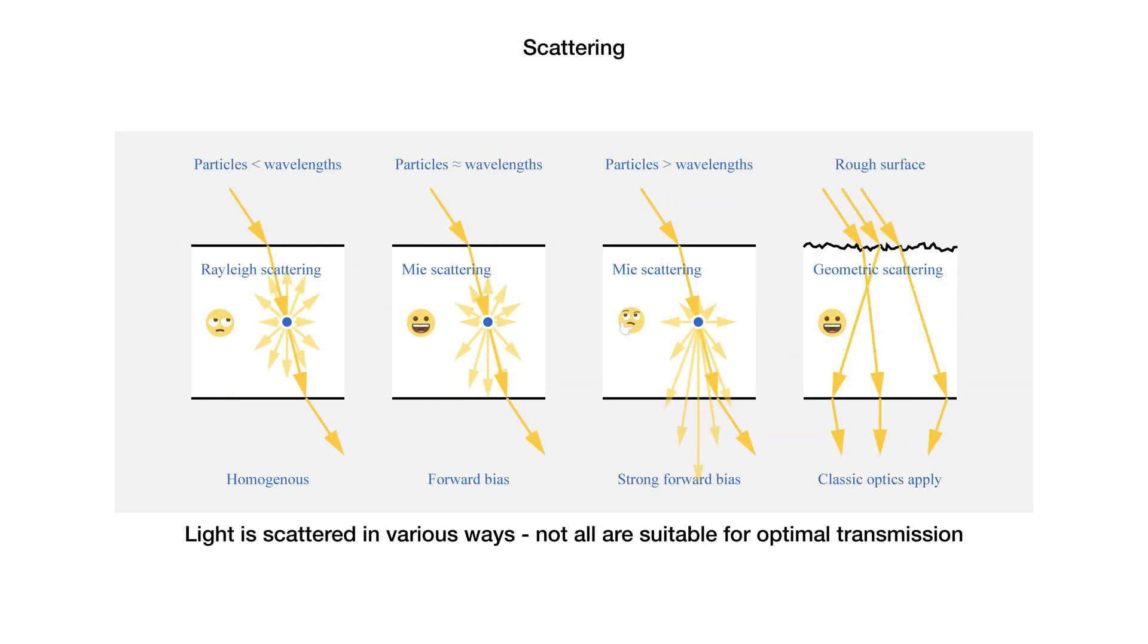There are four ways light can be scattered, depending on the light's wavelengths and the material's particle size. An ideal diffuser should optimize for the first type of Mie scattering, so that most, but not all, light is scattered forward, and also for geometric scattering to introduce as many random refractions as possible.